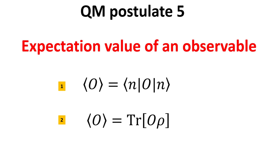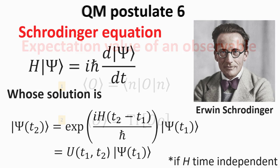Later we will also learn that the state of the system can also be described by a density operator rho, which is useful for representing mixed states. In this case, the expectation value of the observable is given by the trace of the product of the observable O and the density matrix rho. This is given by equation two.